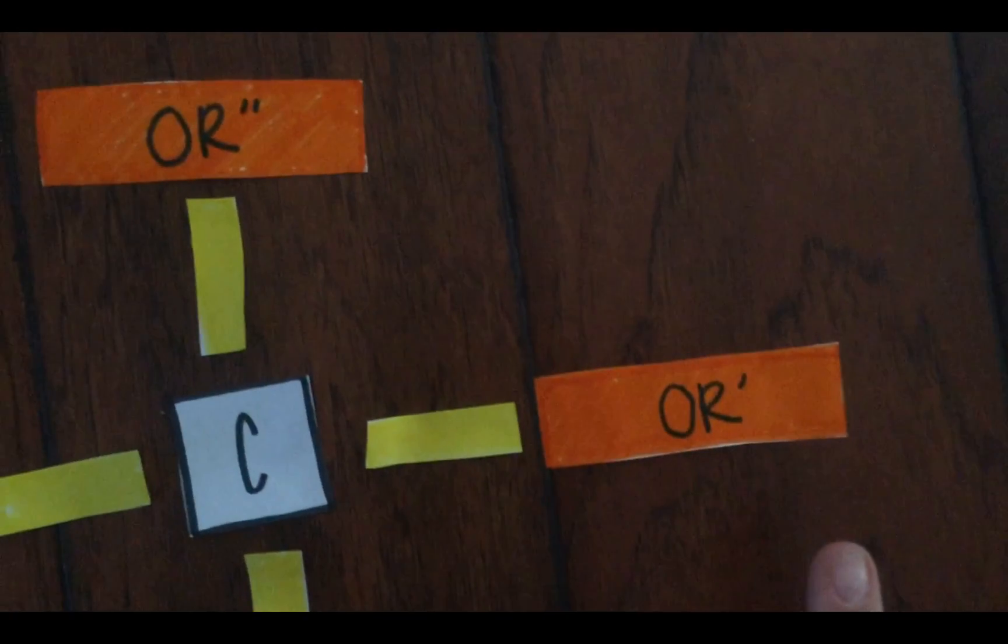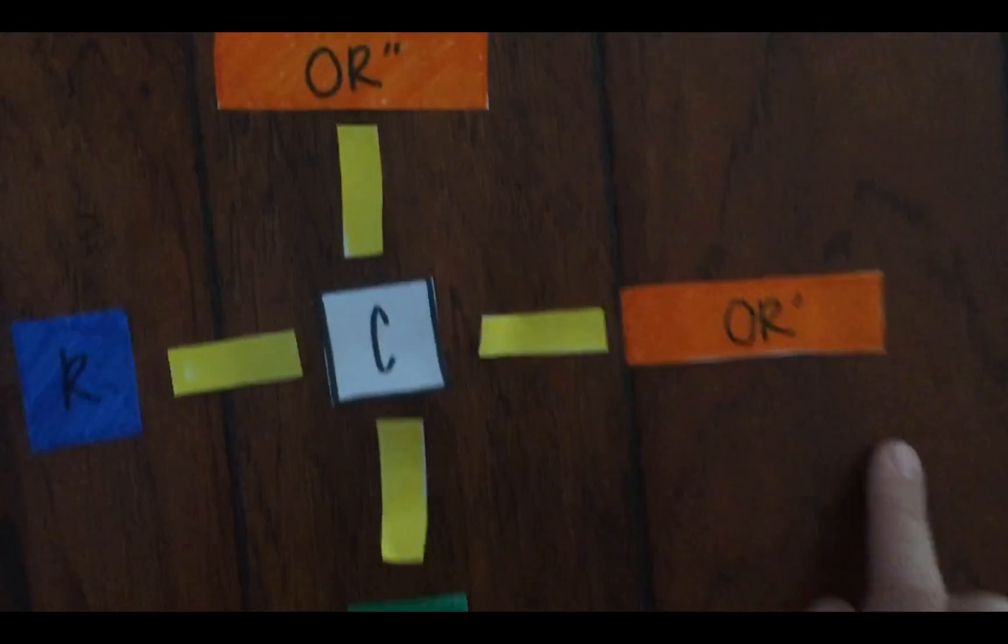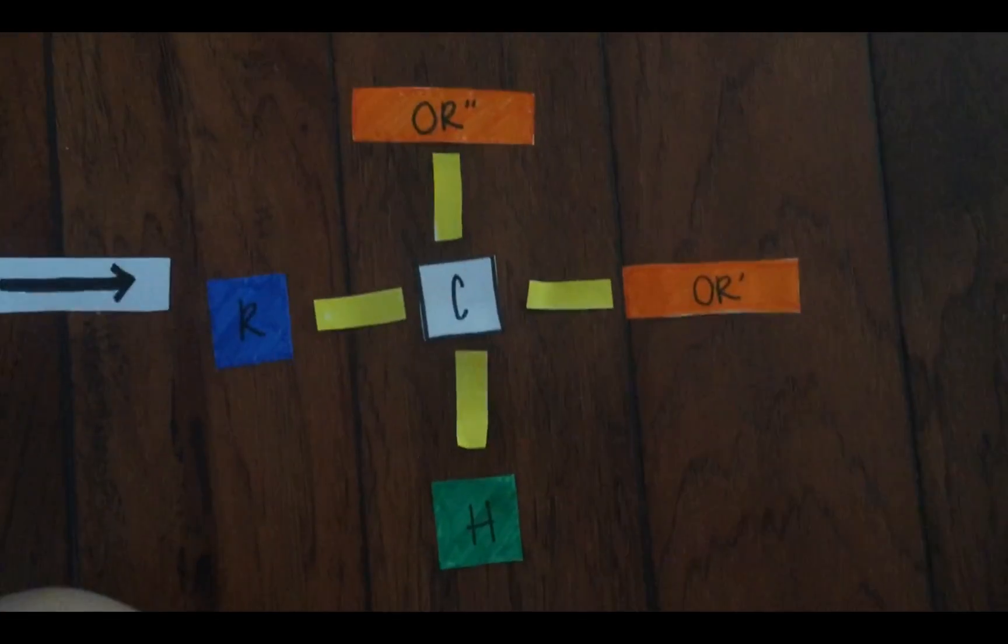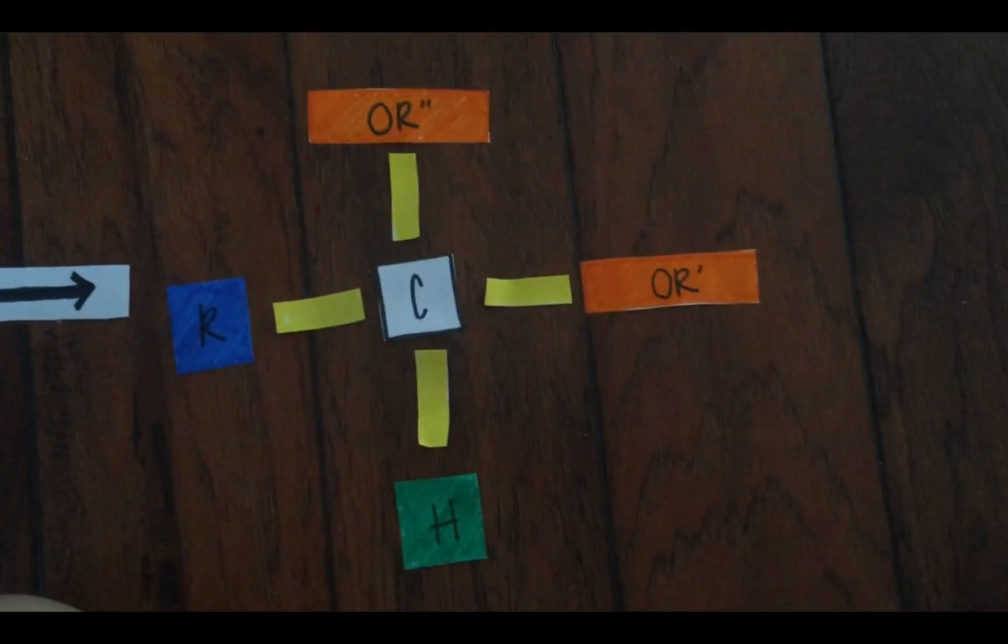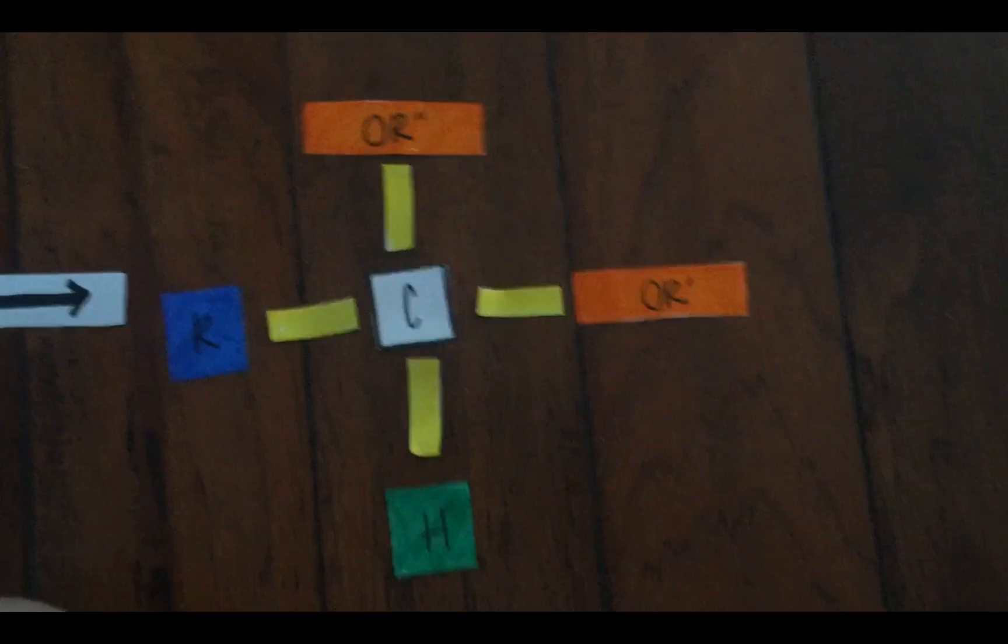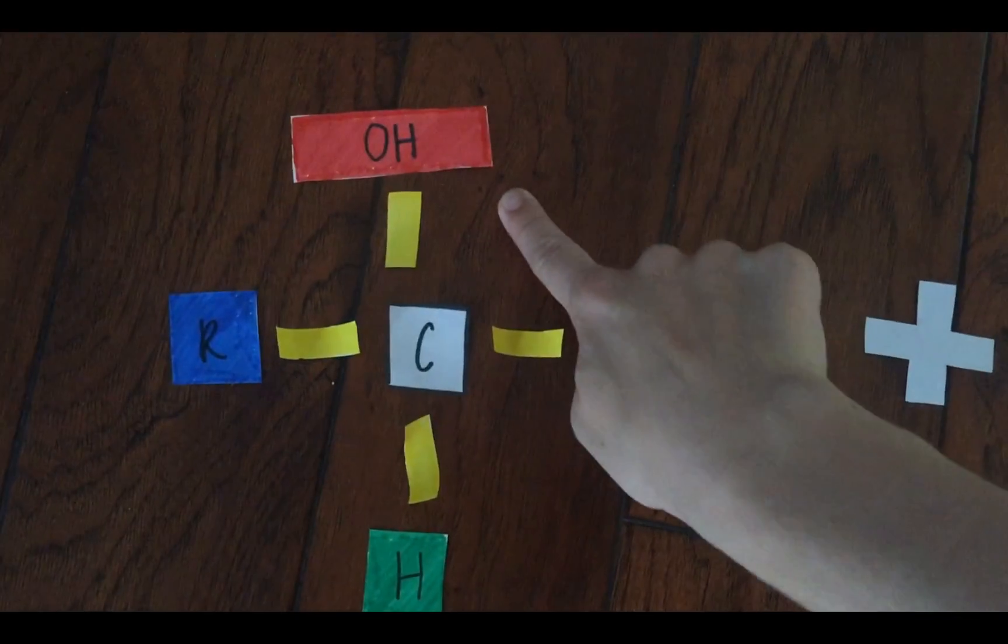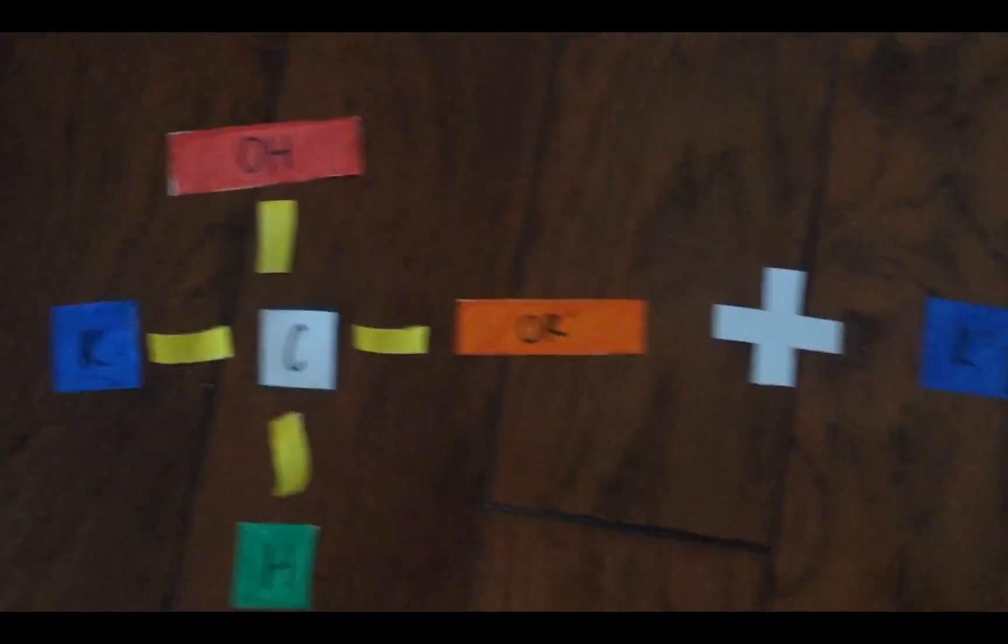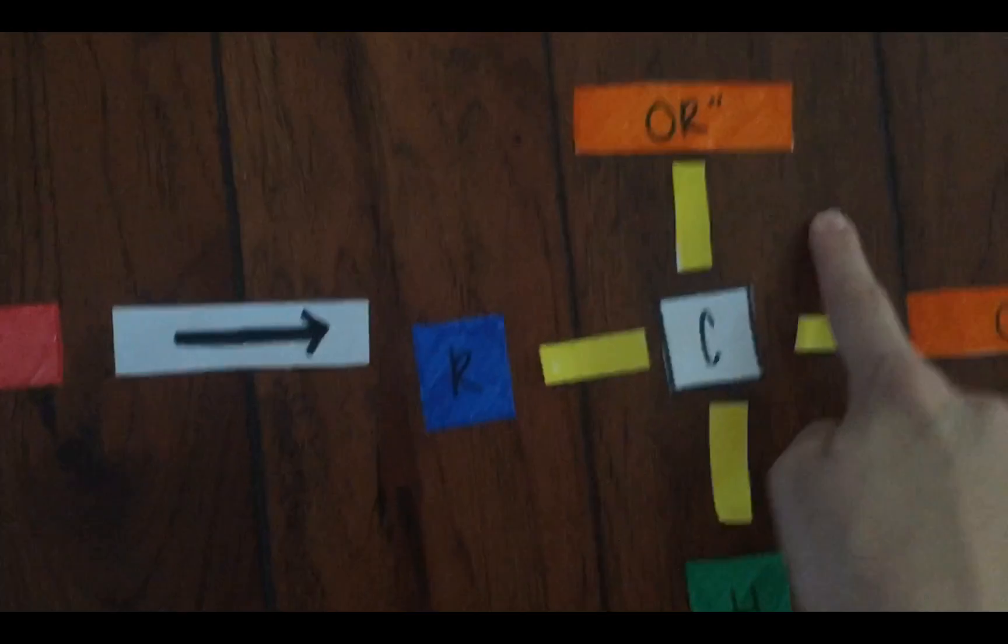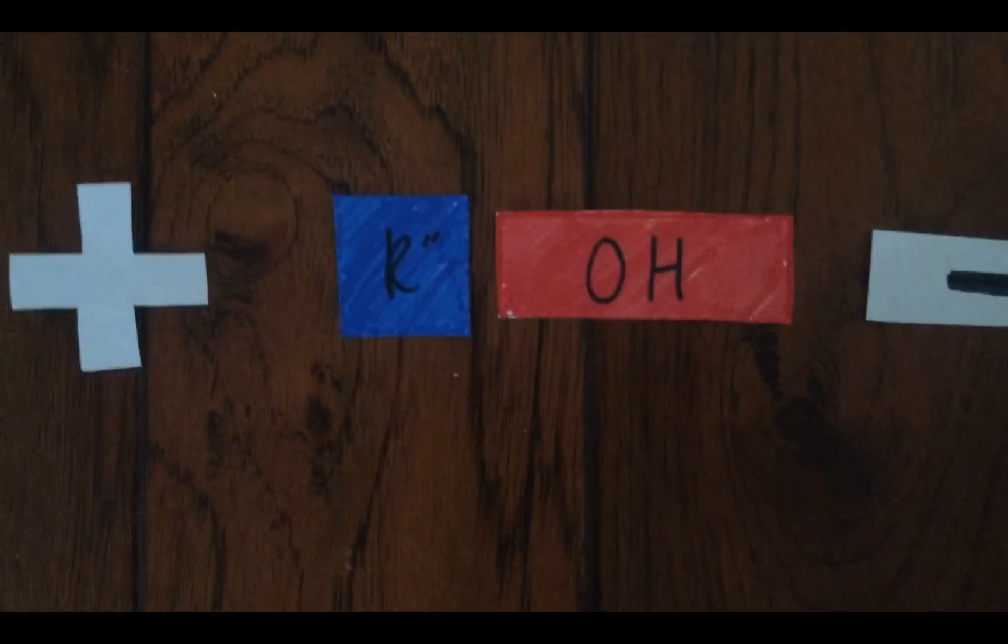Note that the ORs have different apostrophes on it indicating that they could be different types of groups. So as you can see, this is the general form of an acetal and the difference between this and a hemiacetal is the hemiacetal has an OH group above the carbon and an acetal has an OR group above the carbon after the addition of an alcohol.